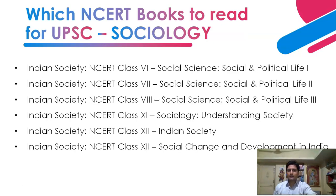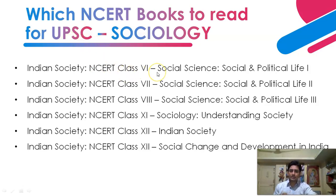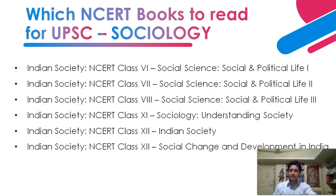For sociology, this subject has great relevance in Mains — in GS Paper 1 under the 'Society' section, there are always two to three questions worth 30 to 40 marks. To cover sociology, start from class 6 'Social Science: Social and Political Life Part 1' and read up to class 12 'Social Change and Developments in India.' If sociology is your optional, this set will definitely help, and even otherwise it will ensure good preparation for GS Paper 1.